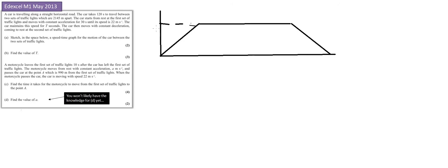That dotted line is 22 meters per second, this is zero. It's 30 seconds to get here. This part is t seconds and it's 120 all the way to the end. It says that it's 2145 meters in total.